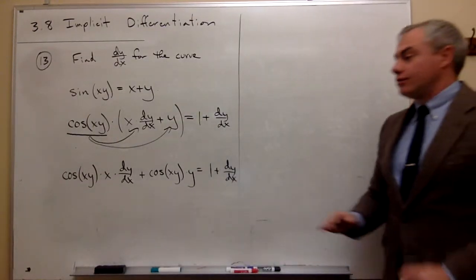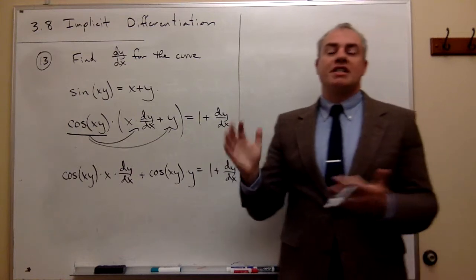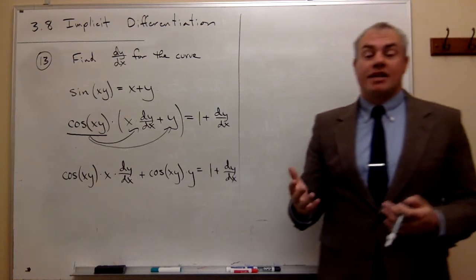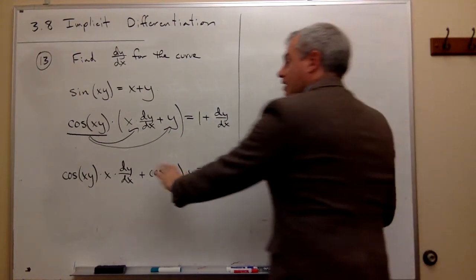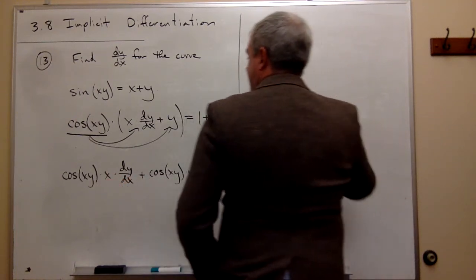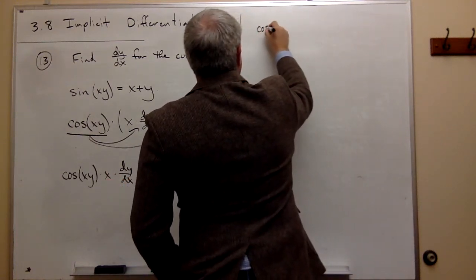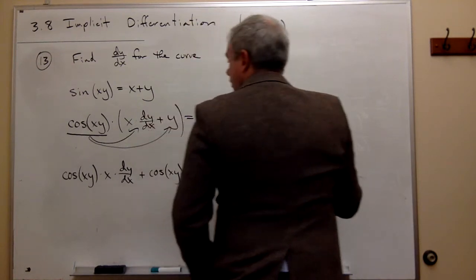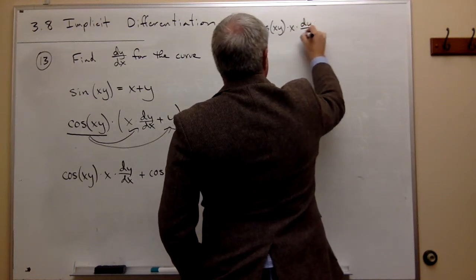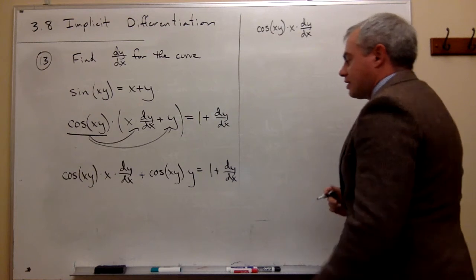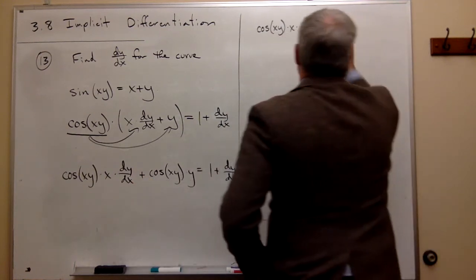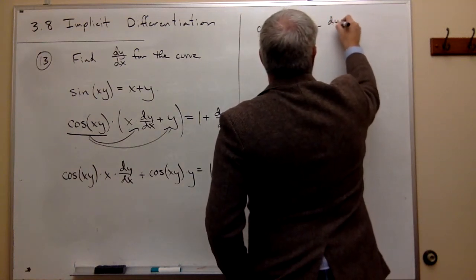Now what I'd like to do, now that I'm right here, is let's get all the dy/dx stuff on one side of the equation and all the non-dy/dx stuff onto the other side of the equation. If I do that, I'll leave this on the left side since it already has a dy/dx, so I'll write cos(xy) times x times dy/dx. And the only other thing that has a dy/dx in it is this dy/dx, and if I move it to the other side of the equation, it's a negative dy/dx.